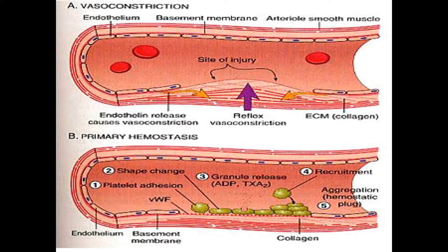Platelets will now come and adhere to this site. Prior to this, there will be a release of vesicles found in endothelial cells called Weibel-Palade bodies — as you remember from the inflammation videos — that also contain selectins. These will now cover the injured area. As you see here, the red spots are the Von Willebrand factor.